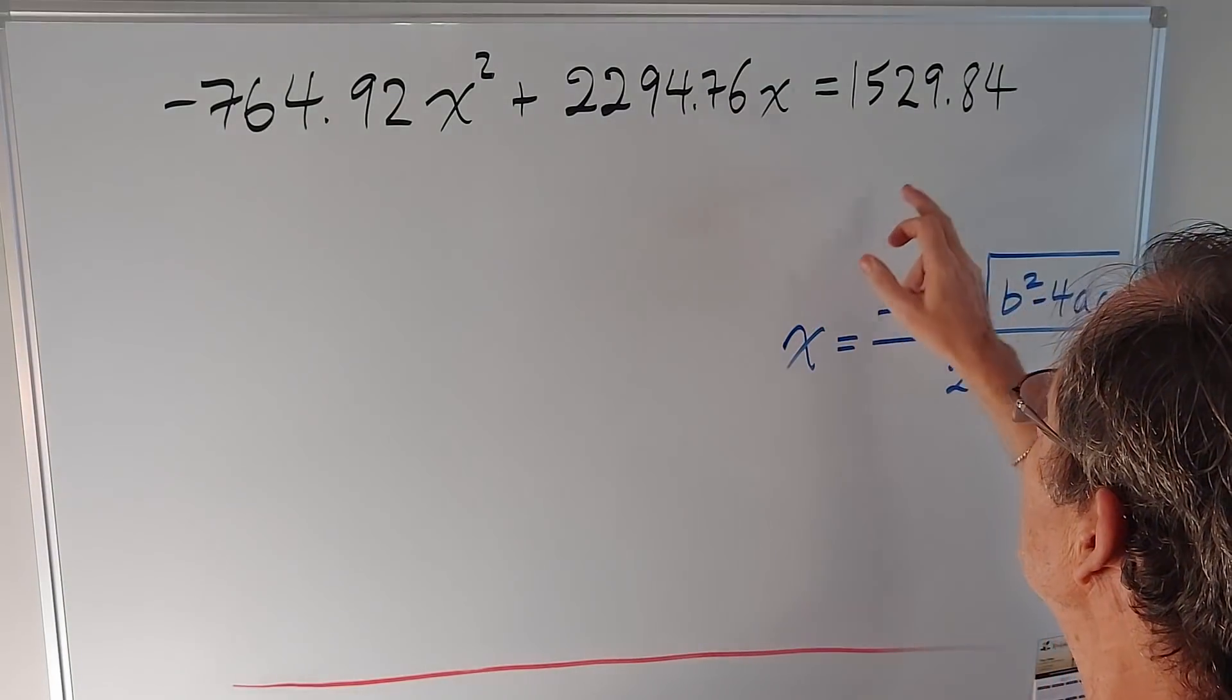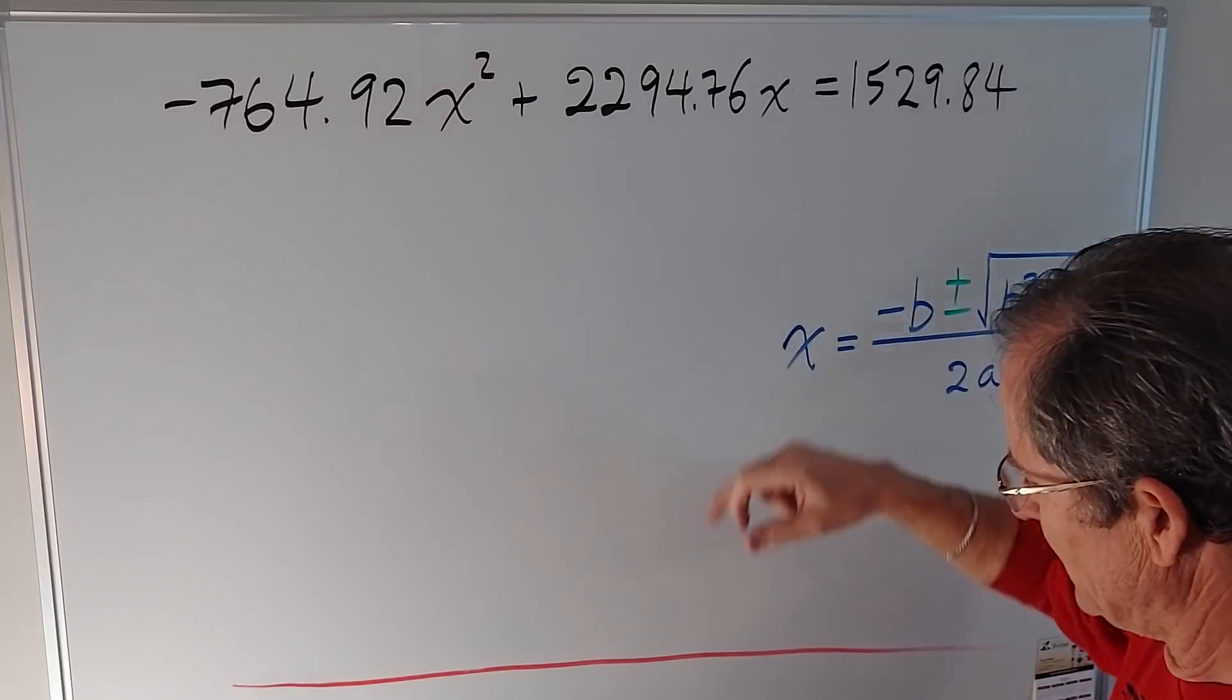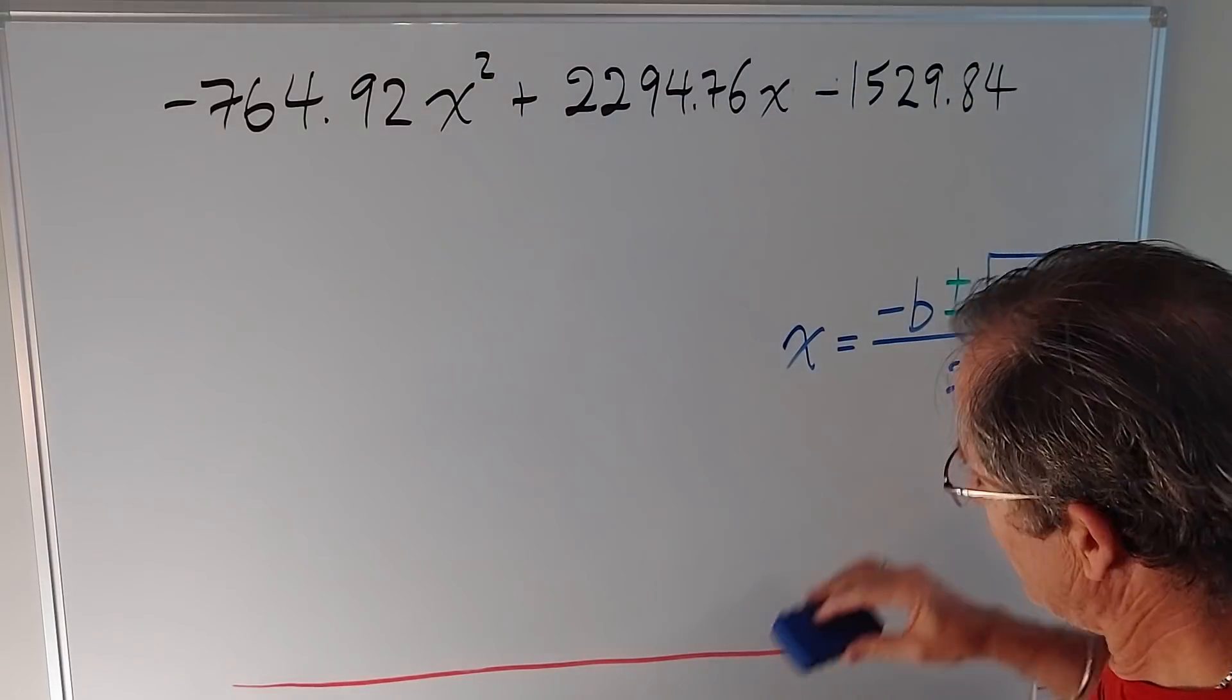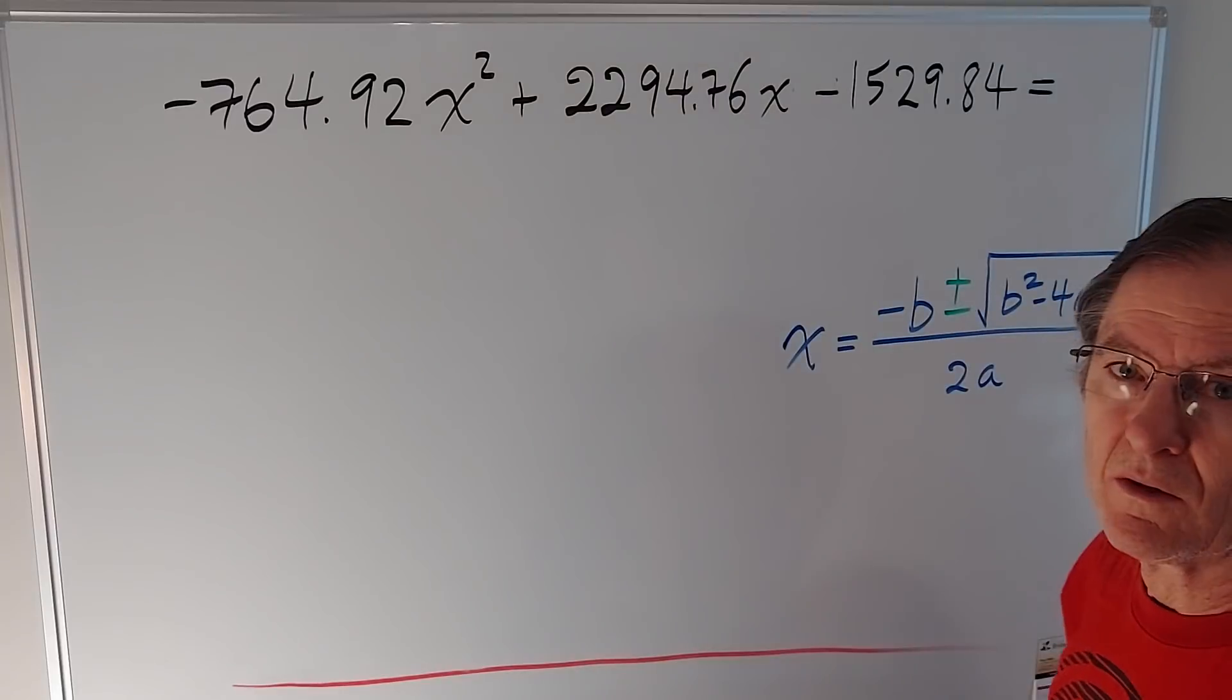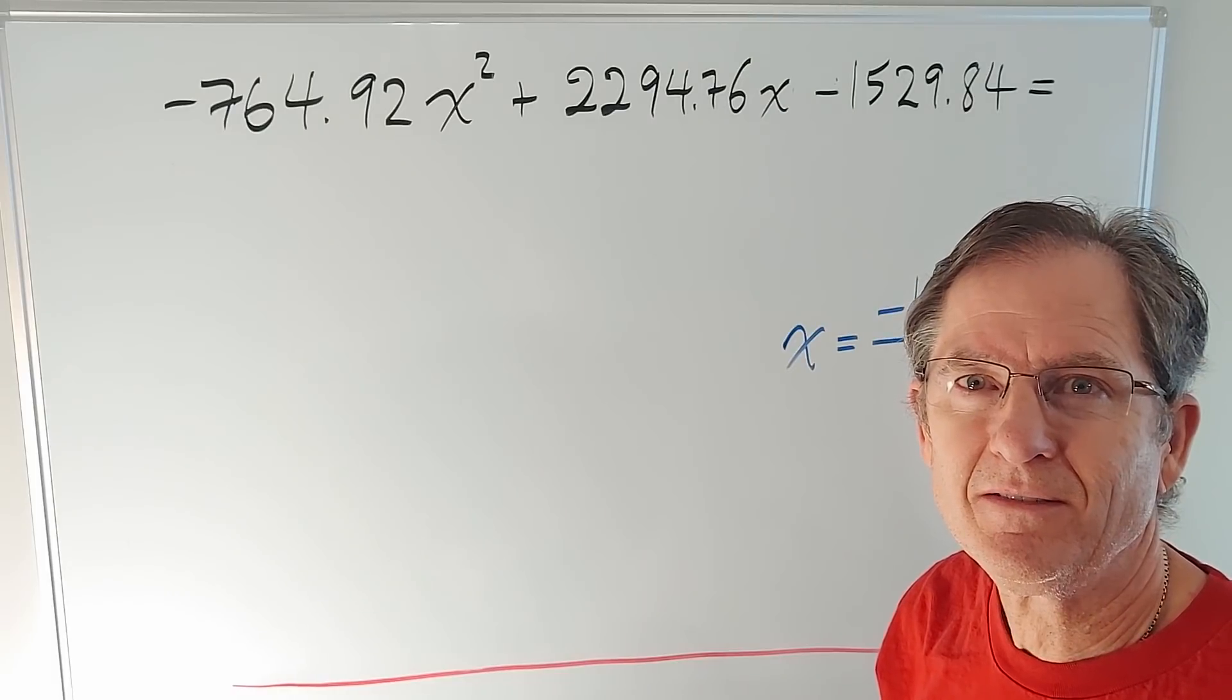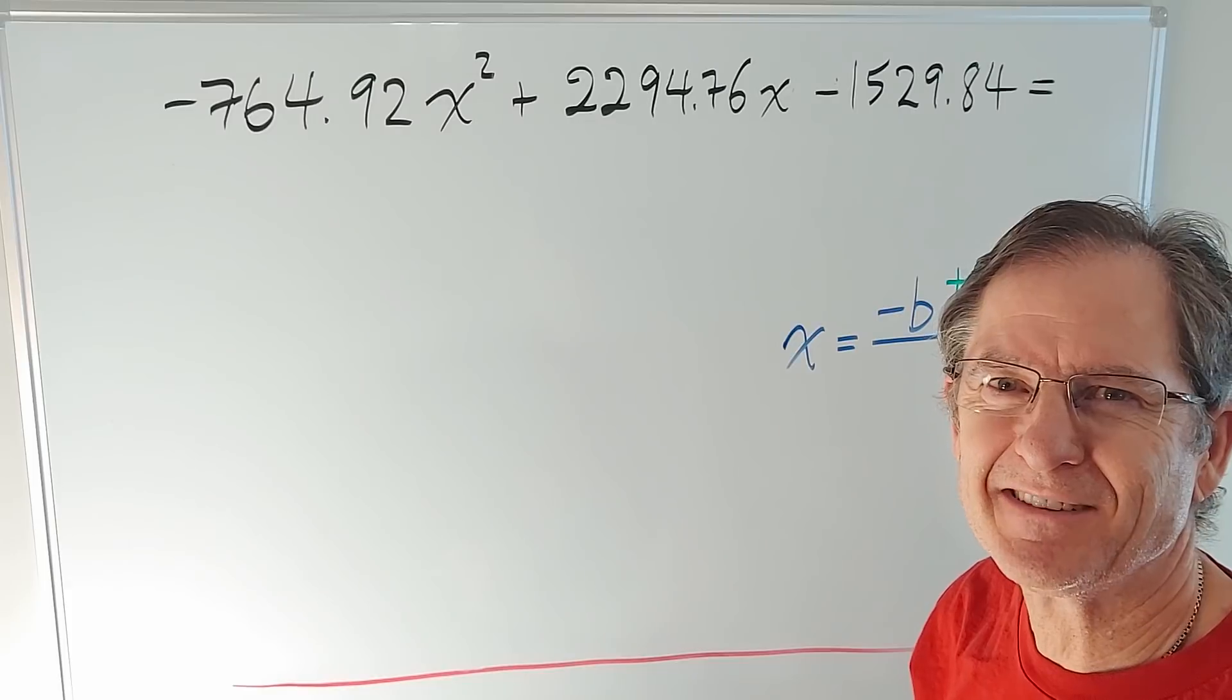You got it. We need to bring this term to the left-hand side. When I bring this term to the left-hand side, what does it become? Negative, right? So if I just change that equal sign to a minus sign, what's left on the right-hand side? Zero? No. Guess again. Big fat zero.